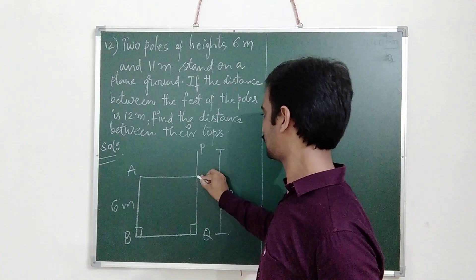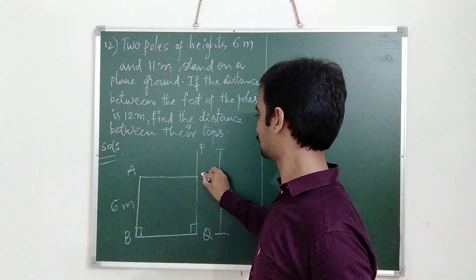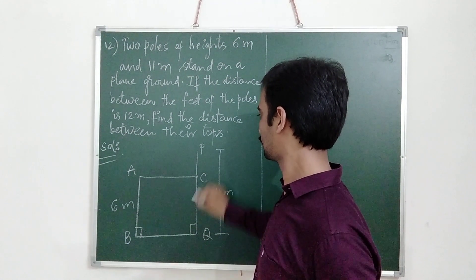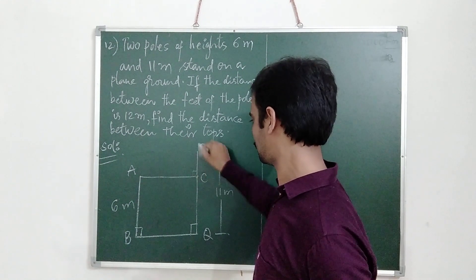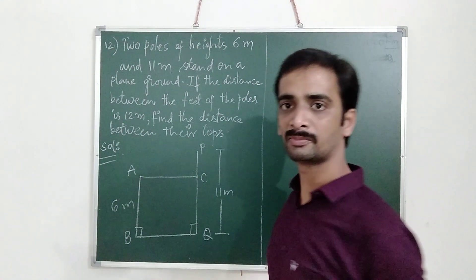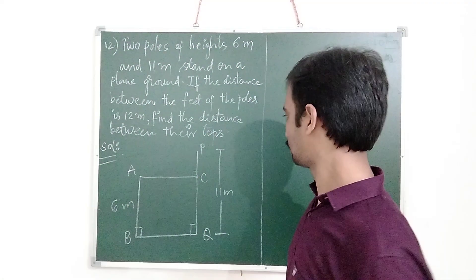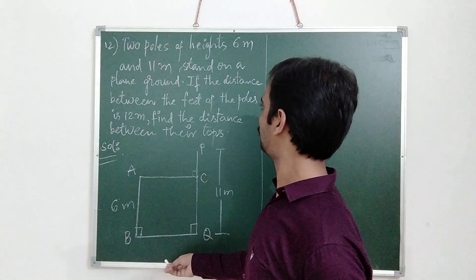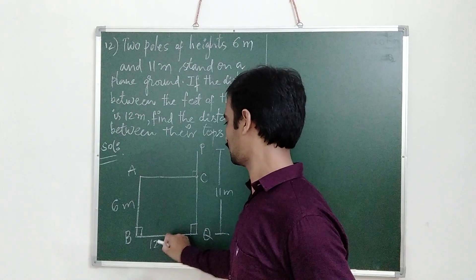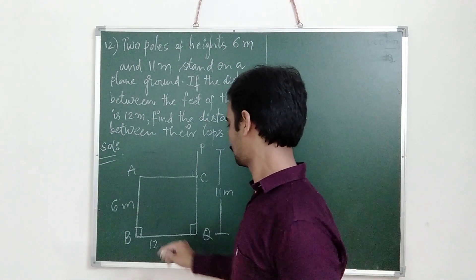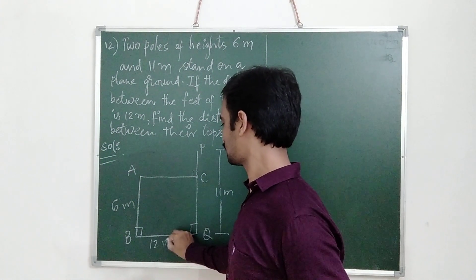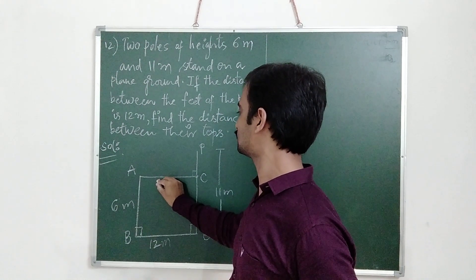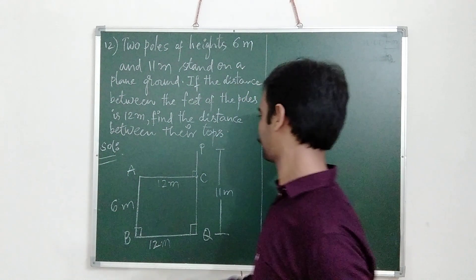Let us draw AC perpendicular to PQ. The distance between the feet is given as 12m, so we can take AC also as 12m.